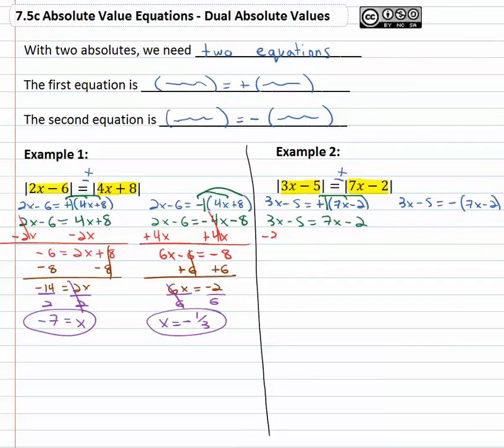We'll get the variable on one side by subtracting 3x from both sides. This gives us negative 5 equals 4x minus 2, then we add 2 to both sides. Negative 3 equals 4x, and finally dividing by 4 giving us x is equal to the fraction negative three fourths. That's our first solution for the variable.